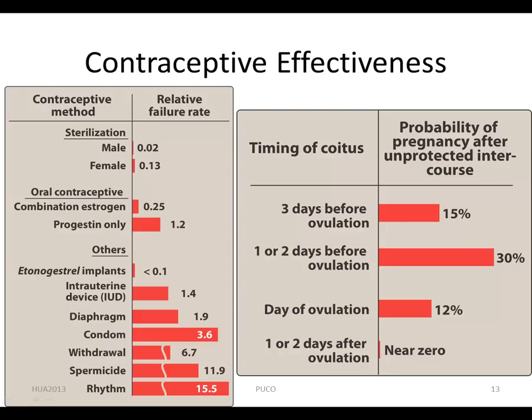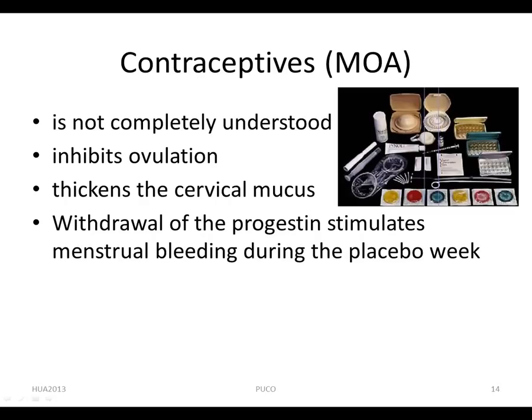This slide shows the contraceptive effectiveness in terms of preventing pregnancy. The mechanism of action for hormonal contraceptives is not completely understood. It is likely that the combination of estrogen and progestin administered over an approximately three-week period inhibits ovulation.